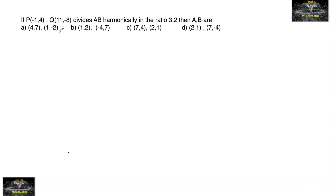If P(-1, 4) and Q(11, -8) divide AB harmonically in the ratio 3:2, then find A and B.